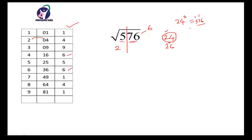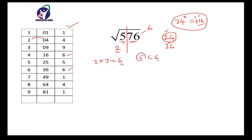There is another method if you don't want to check through actually finding the square of the number. Here the number is 2, and after 2 which number comes is 3. So 2 times 3 is 6. Now this first part number is 5 and 2 × 3 = 6. Since 5 is smaller than 6, we will take the smaller number and not the bigger number. Therefore the square root of 576 is 24.